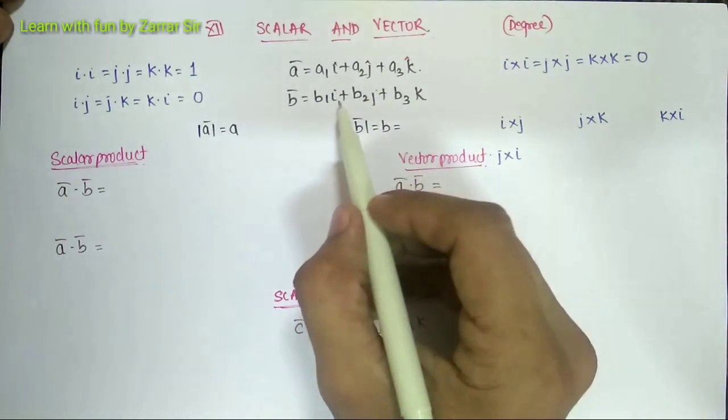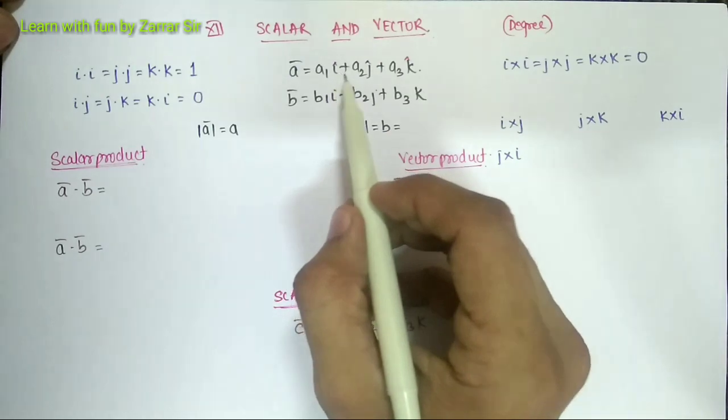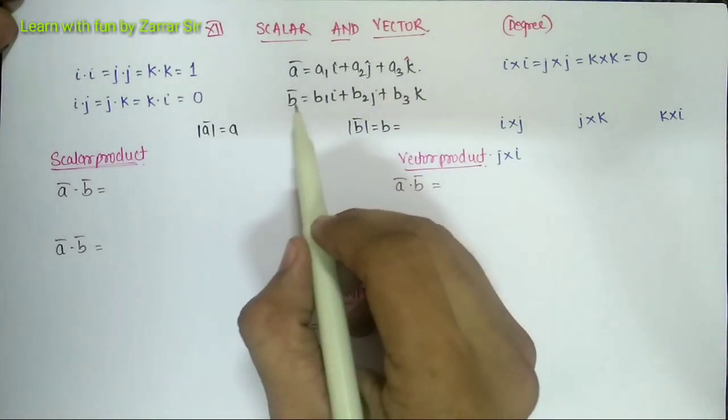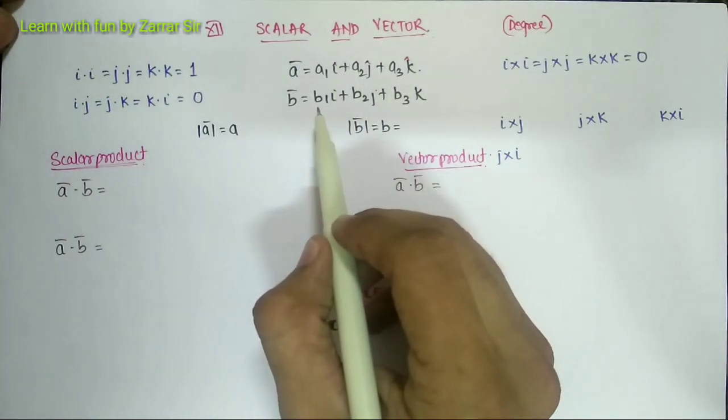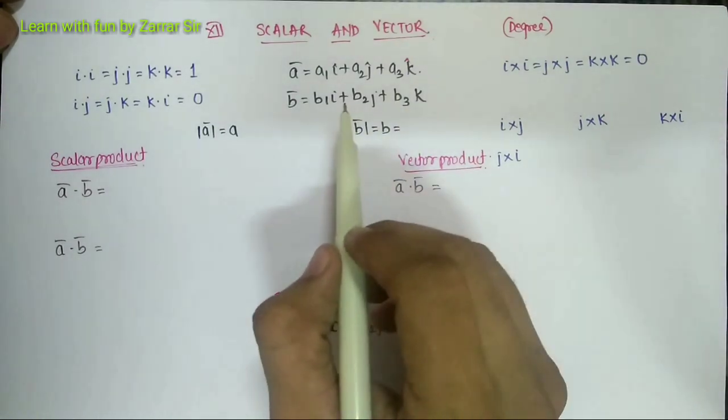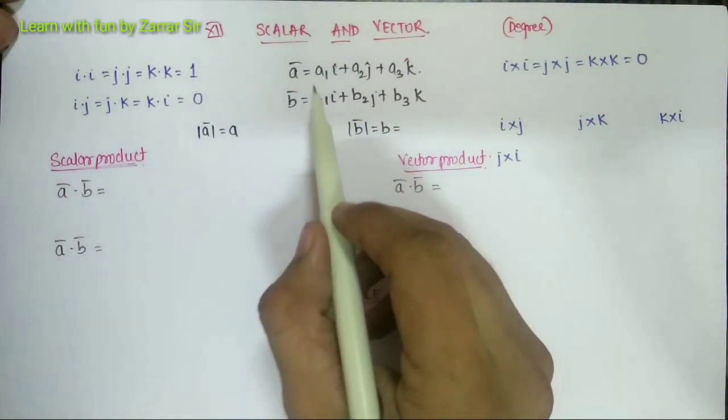Similarly another vector b bar is b1 i plus b2 j plus b3 k. Now if I need to do its dot product, what will happen?